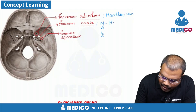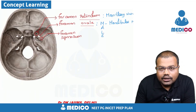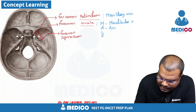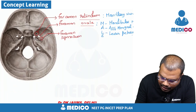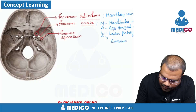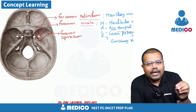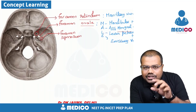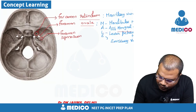In the mnemonic MALE: M is for the mandibular nerve, A is for the accessory meningeal artery, L is for the lesser petrosal nerve, and E is for the emissary vein. So these four MALE structures pass through foramen ovale — just remember 'male through oval.'